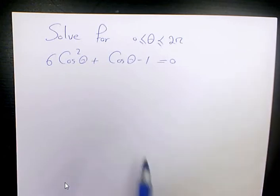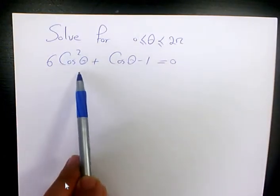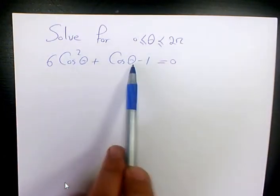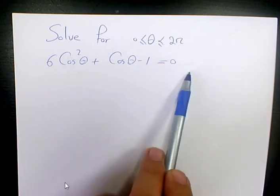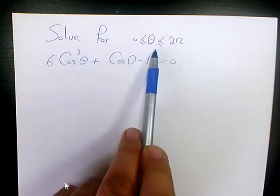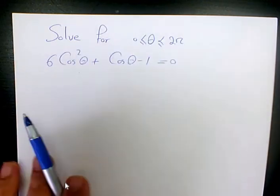In this video I want to solve this trigonometric equation which is 6 cosine squared theta plus cosine theta minus 1 equals 0, and we need to solve it for theta between 0 and 2 pi.